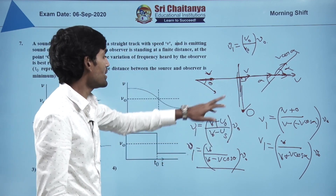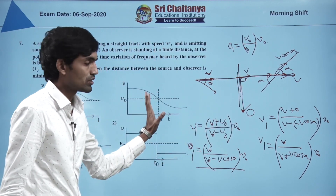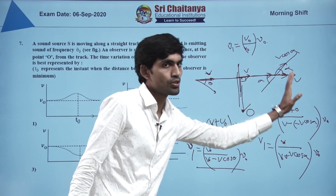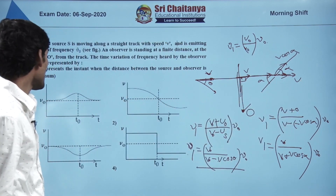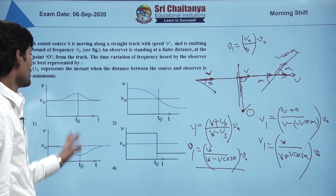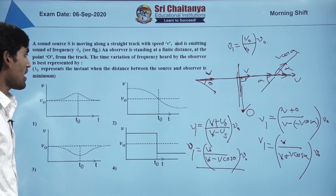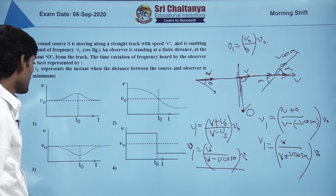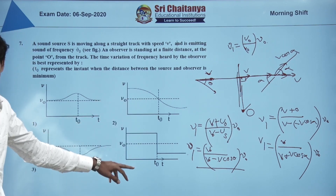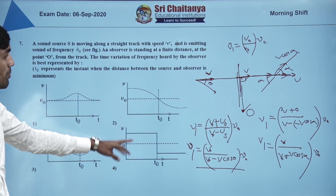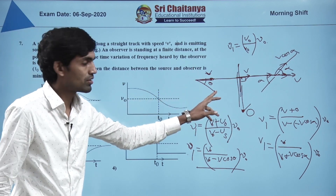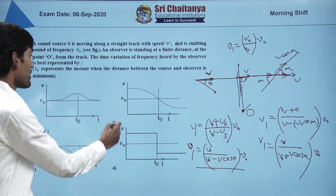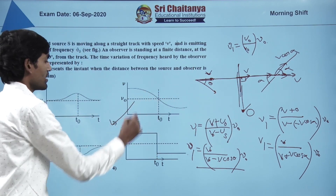It is more than ν₀ approaching, equals ν₀ at the closest point, and less than ν₀ receding. As θ is continuously changing, we conclude the best graph is the second option.